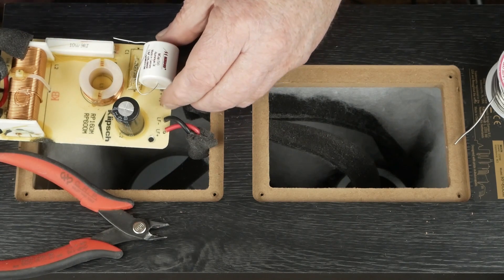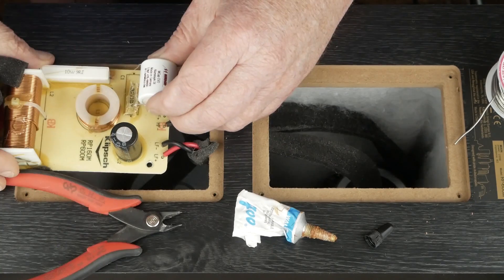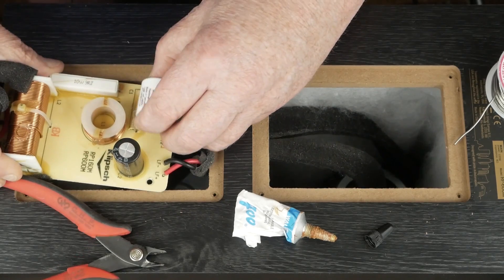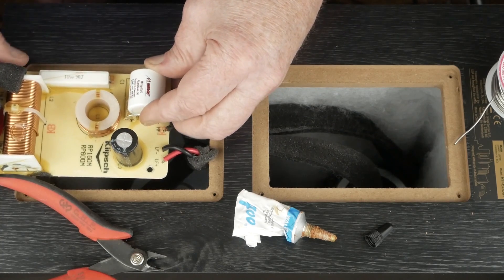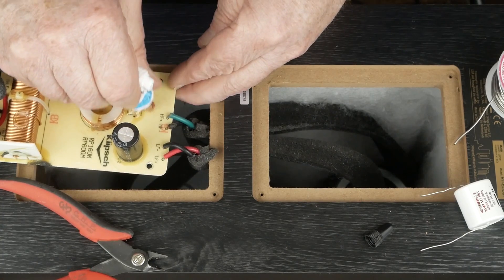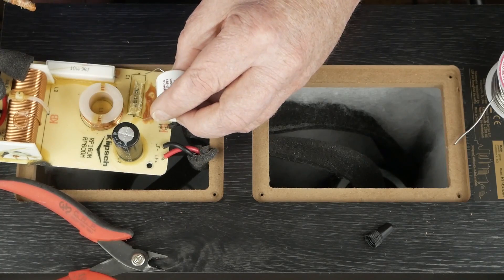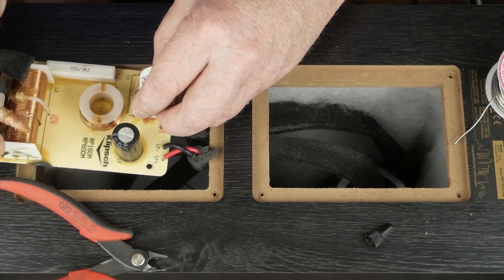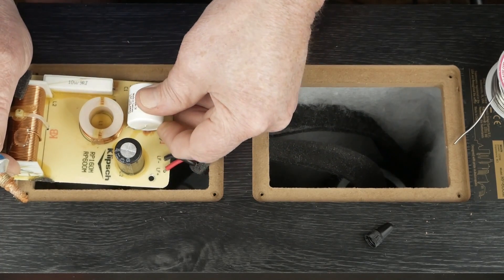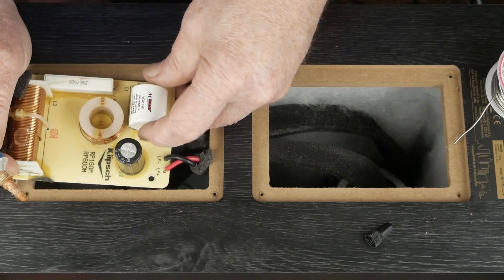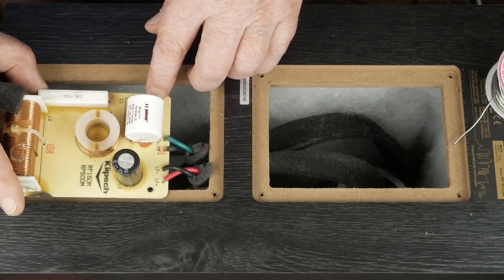And then let's go ahead and get our contact cement ready after we kind of bend the wires the way we want them. Trial fit it like that. That looks beautiful right there. And then you just want to make sure you got enough room there to put that screw back in.